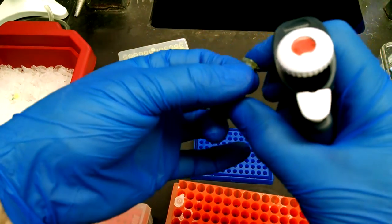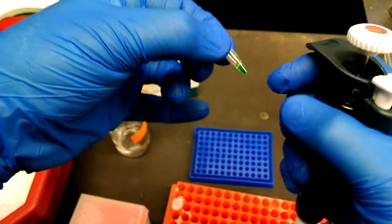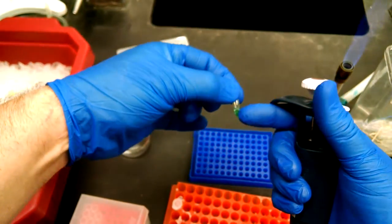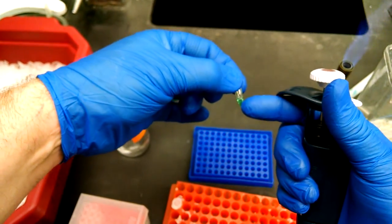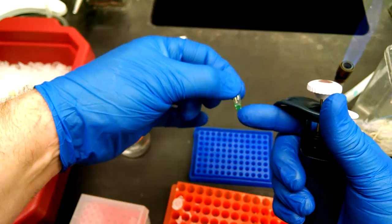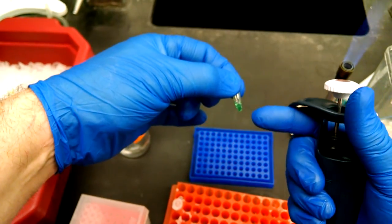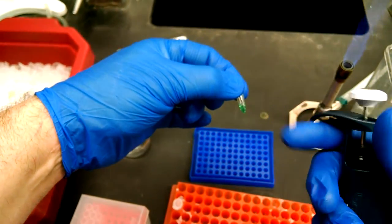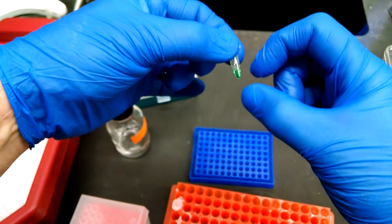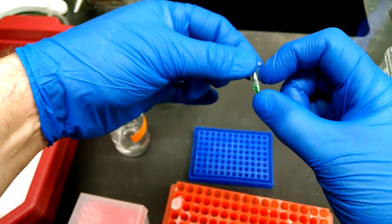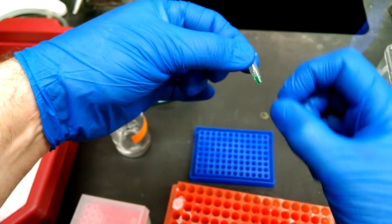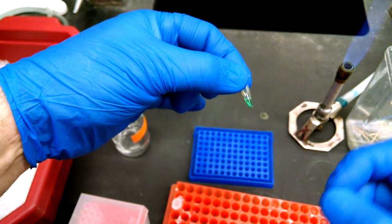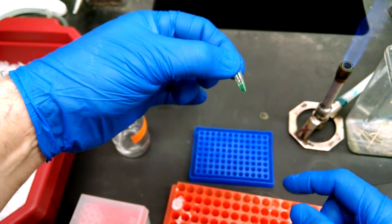So now we've added 25 microliters of master mix, 22 microliters of water, one microliter of template DNA, one microliter of one primer, one microliter of another primer. That adds up to 50 microliters. So it should look like 50 microliters. If it looks like a lot more or a lot less, you got a problem. So you should always look at your sample and make sure that it looks right.